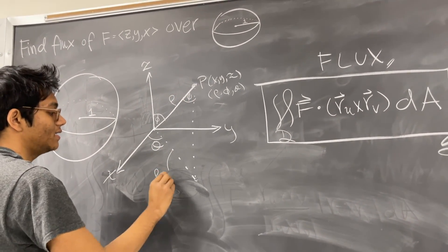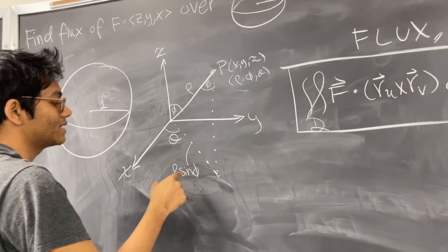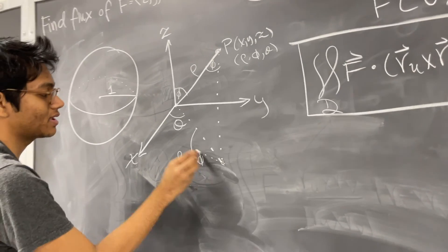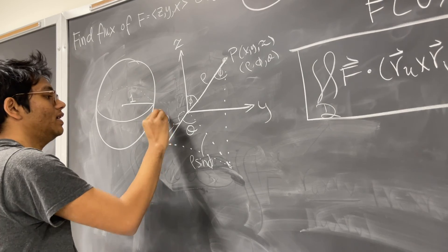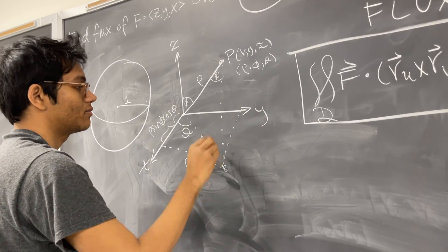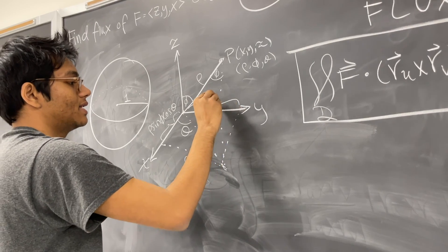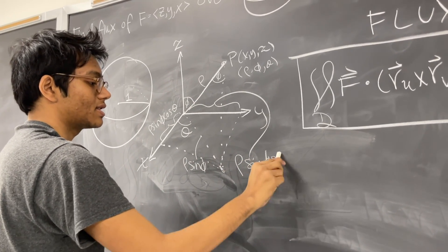This is rho sine phi, and so since this is rho sine phi, project this onto the X axis. So this just becomes rho sine phi cosine theta, and likewise projected onto the Y axis, this becomes rho sine phi sine theta.